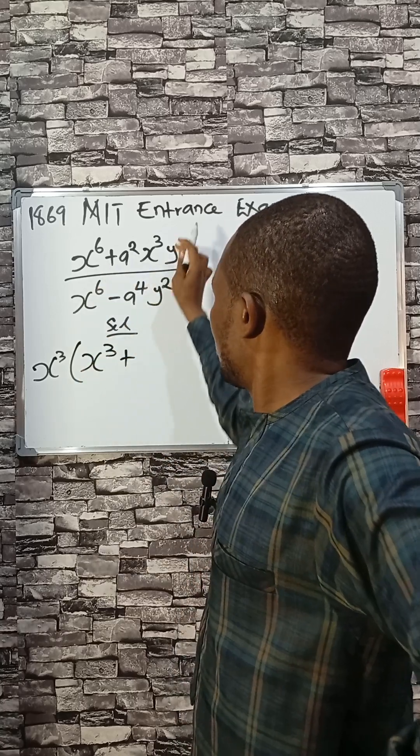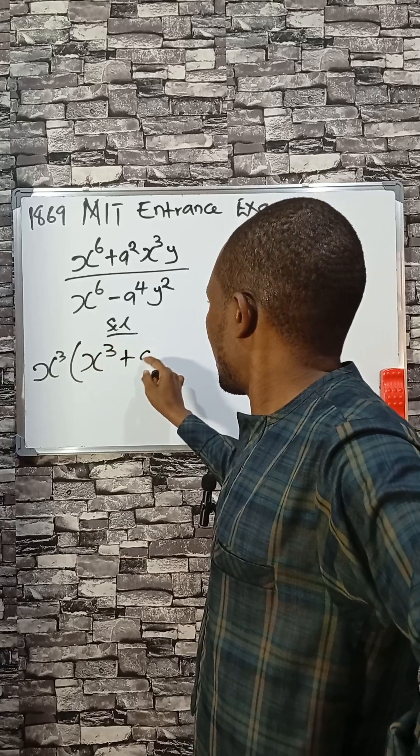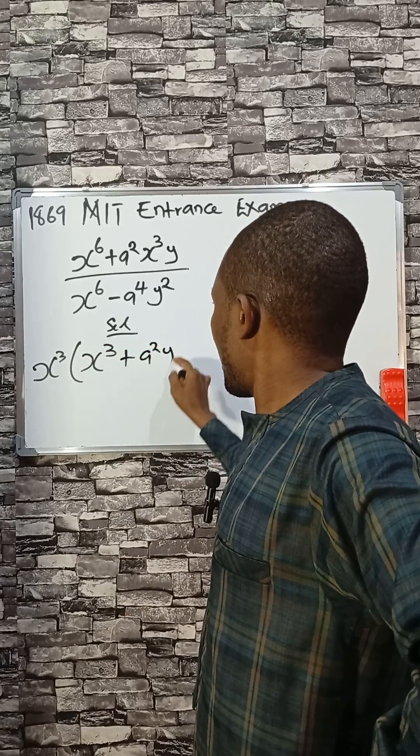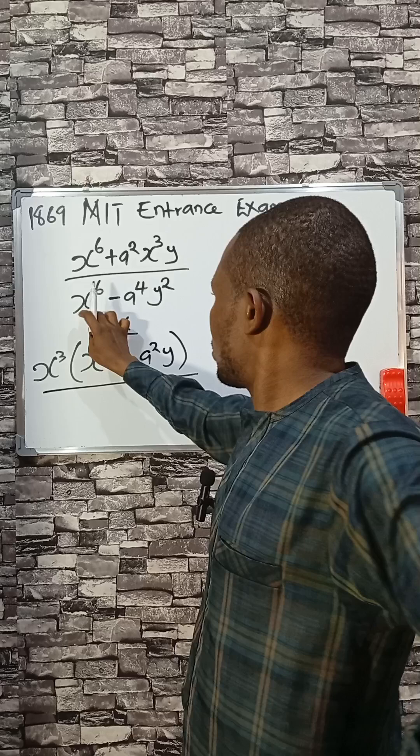Now if you divide the whole of this by x cube, you have a squared y. Do the same to this one.